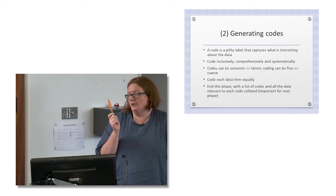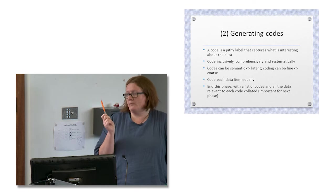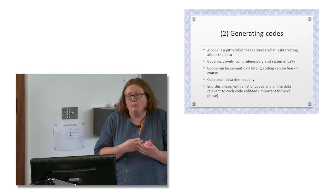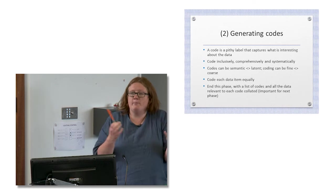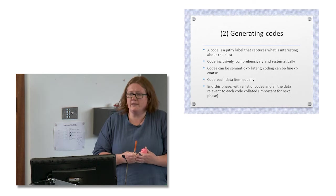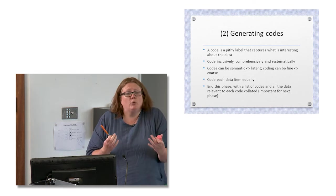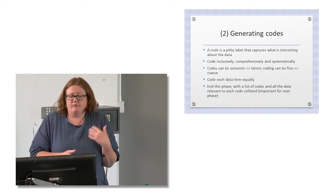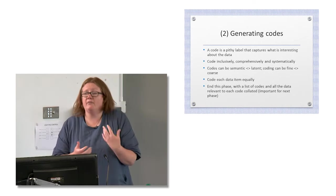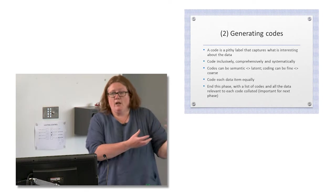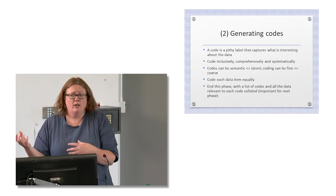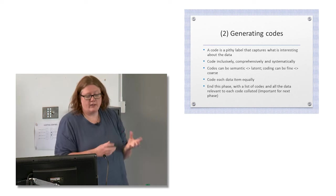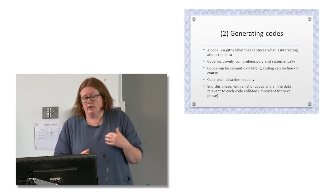In our approach, your code can evolve — it can become something quite different, get bigger, or be broken up into three codes because the original became too broad. Because it's a flexible and organic process, we suggest doing a couple of coding sweeps, since the codes you start out with and the codes you finish with might be quite different. The main distinction we have around codes — which again tends to be treated as an either/or — is the idea of codes as semantic or codes as latent.